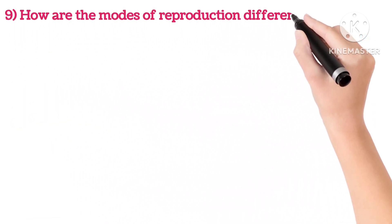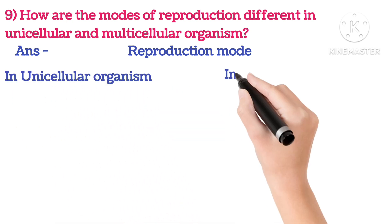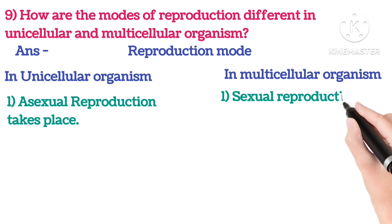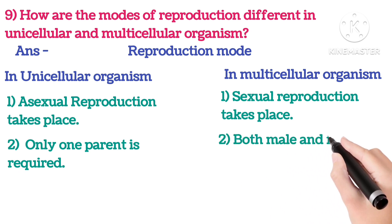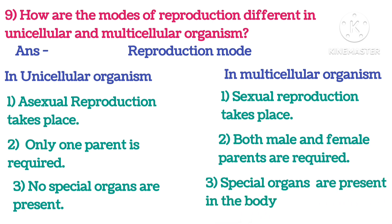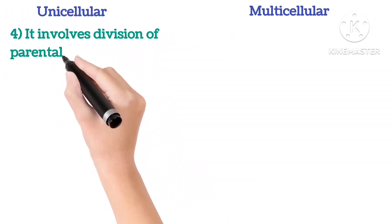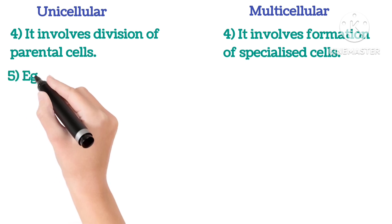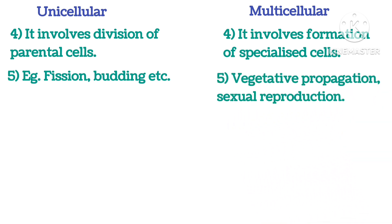Ninth: How do the modes of reproduction differ in unicellular and multicellular organisms? In unicellular organisms, asexual reproduction takes place; in multicellular organisms, sexual reproduction takes place. In unicellular organisms, only one parent is required; in multicellular organisms, both male and female parents are required. No special organs are present in unicellular organisms, whereas special reproductive organs are present in multicellular organisms. In unicellular organisms, reproduction involves division of the parent cell; in multicellular organisms, it involves formation of specialised cells. Examples: unicellular — fission and budding; multicellular — vegetative propagation and sexual reproduction.